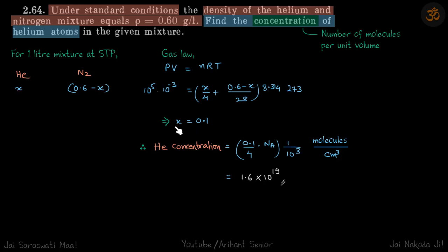So solving this we get X is equal to 0.1, so Helium concentration will be total number of molecules of Helium divided by 1 litre. So number of molecules of Helium will be 0.1 by 4 into nA divided by 10 cube.